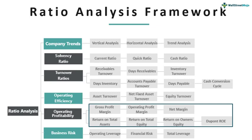Next we have operating efficiency, which covers asset turnovers and equity turnovers — essentially how you are able to generate sales and net income or profits relative to your utilization of assets or equity deployed in the company. Operating profitability talks about how well you are generating gross profits, operating profits and net profit margins as a company. Importantly, we also look at return on equity (ROE), return on total assets, and in addition, the DuPont ROE — a comprehensive way of understanding how return on equity is generated.